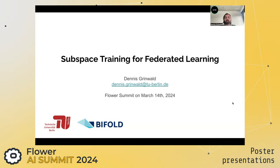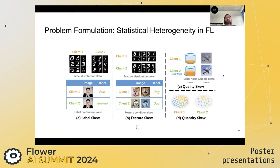Hi, my name is Dennis Greenwald. I'm a PhD student with the Machine Learning Group at the Technical University of Berlin and the Berlin Institute for the Foundations of Learning in Data, or in short, BIFOLD. Today, I want to speak about our recent work on subspace training for federated learning. In our work, we consider the problem of statistical heterogeneity.